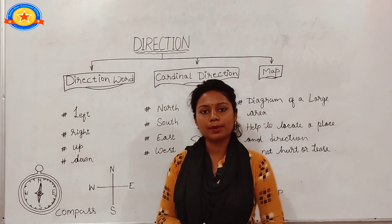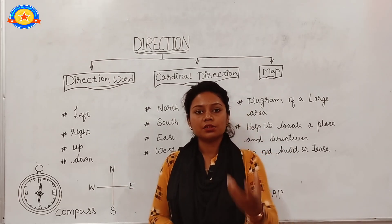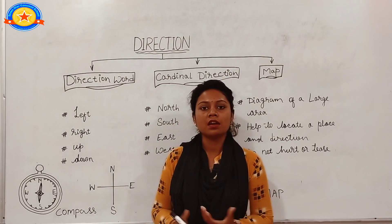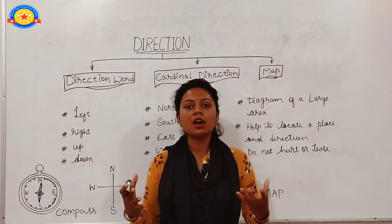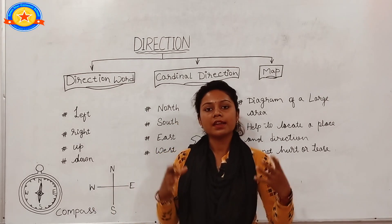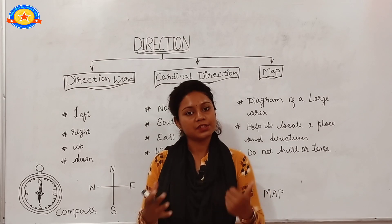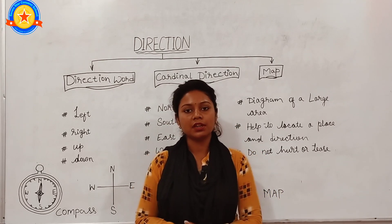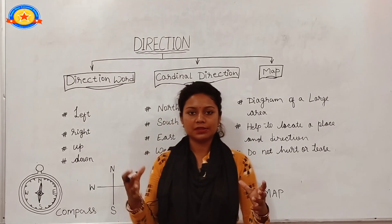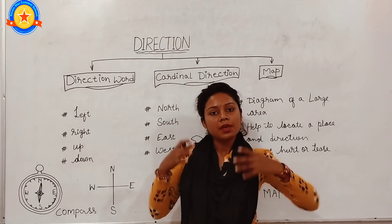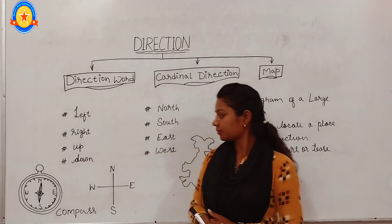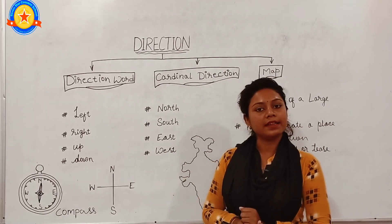If you want to know more about direction, we can do an experiment. Get up early in the morning and stand in front of the sun. Put your right hand towards the sun — your right hand shows east, your left shows west, in front of you is north, and behind you is south. This way, the sun helps us find direction.